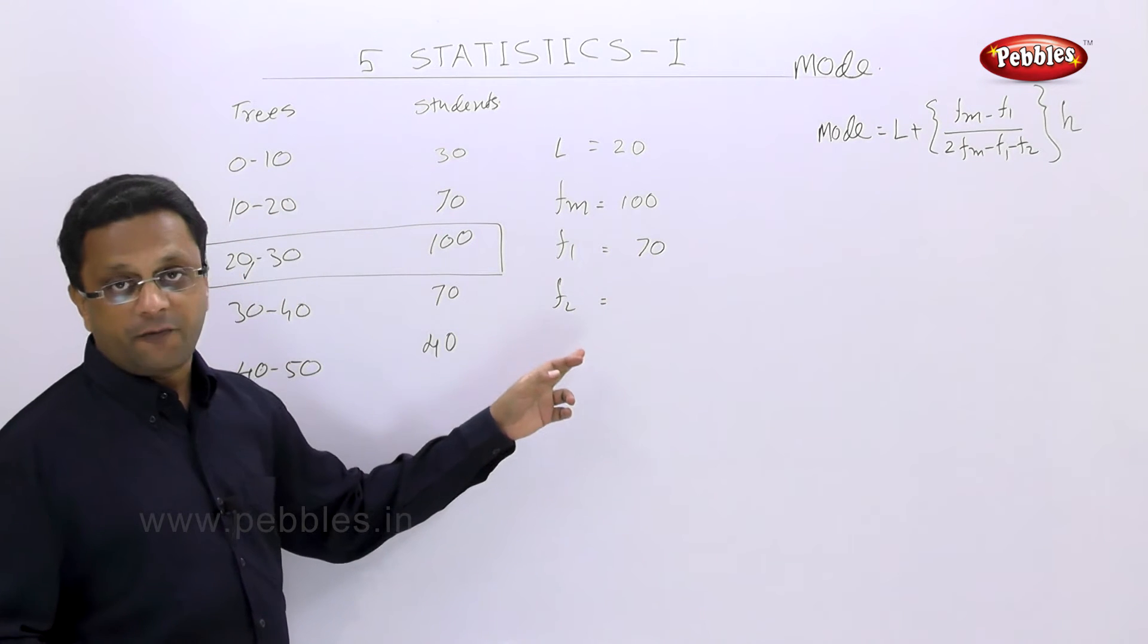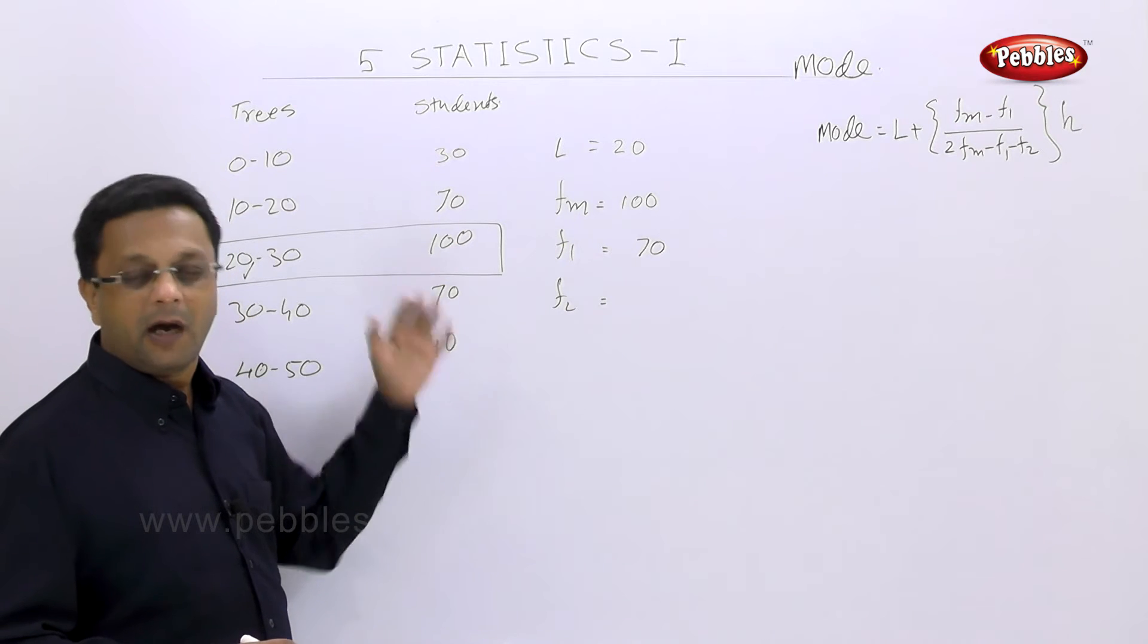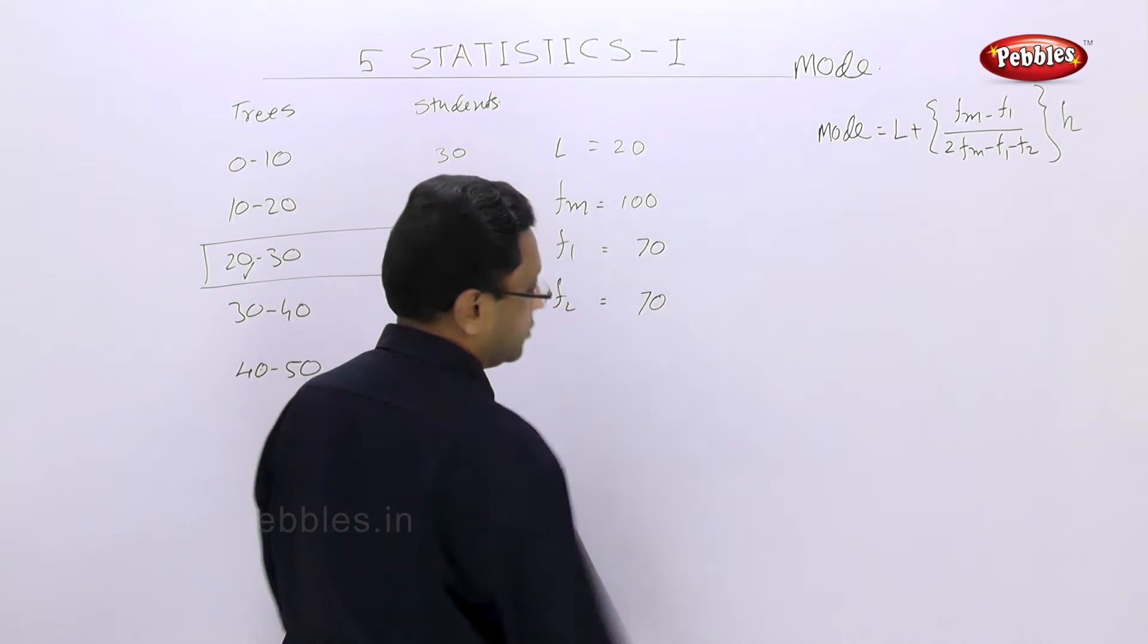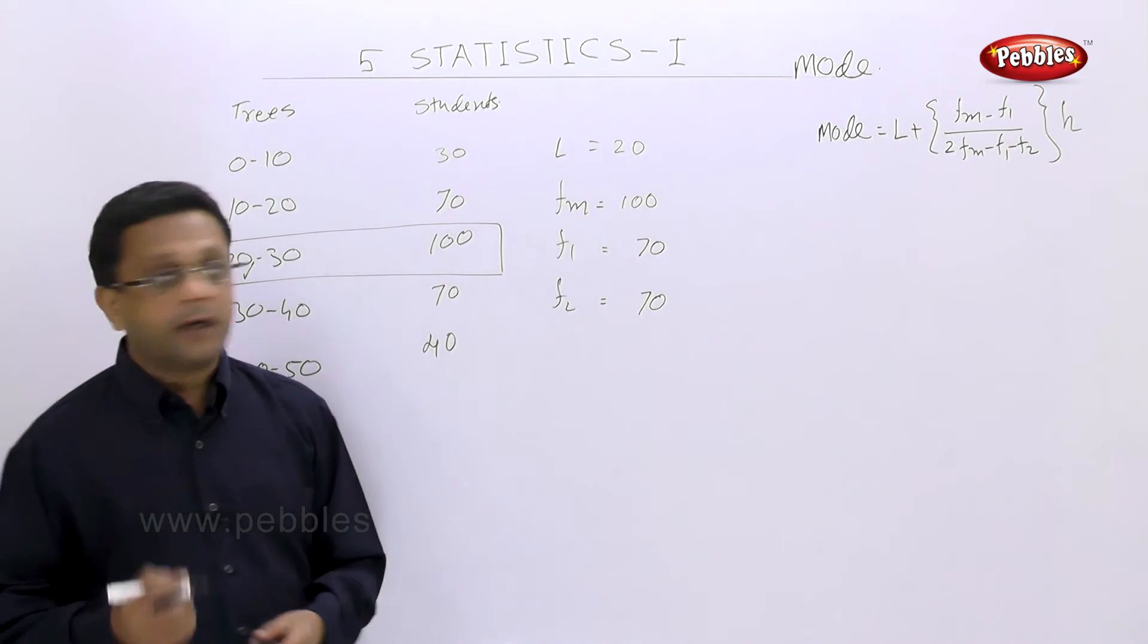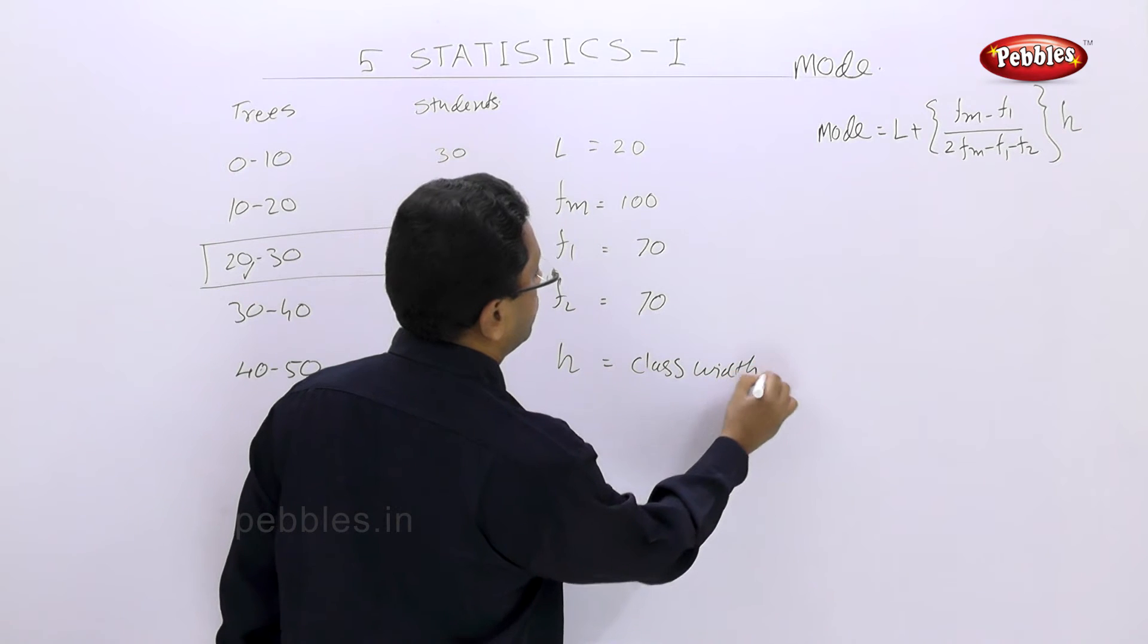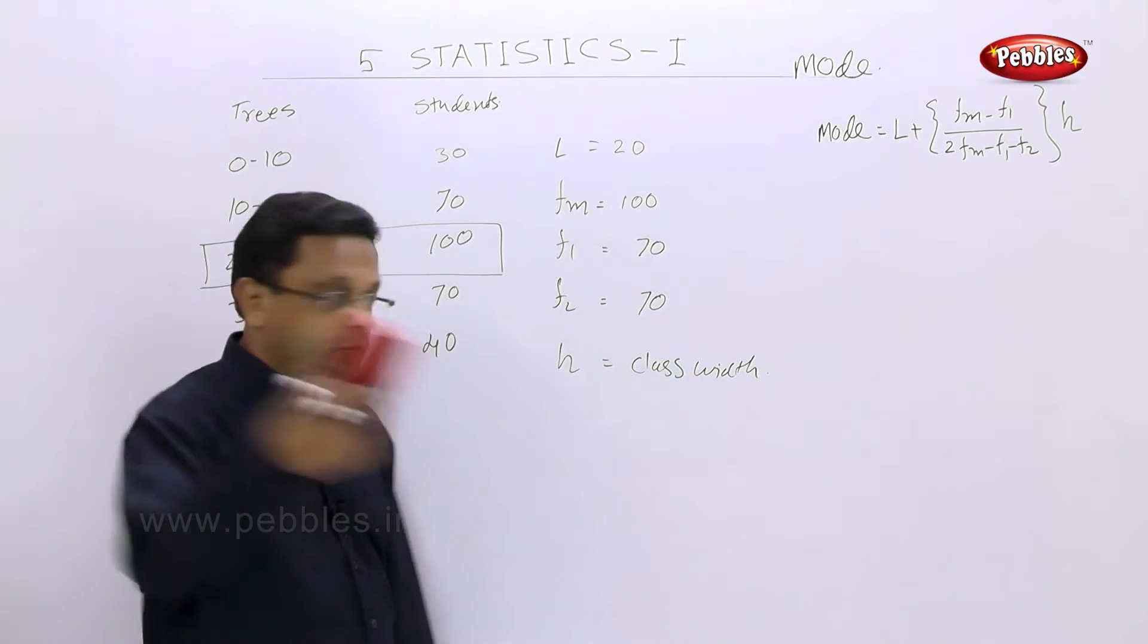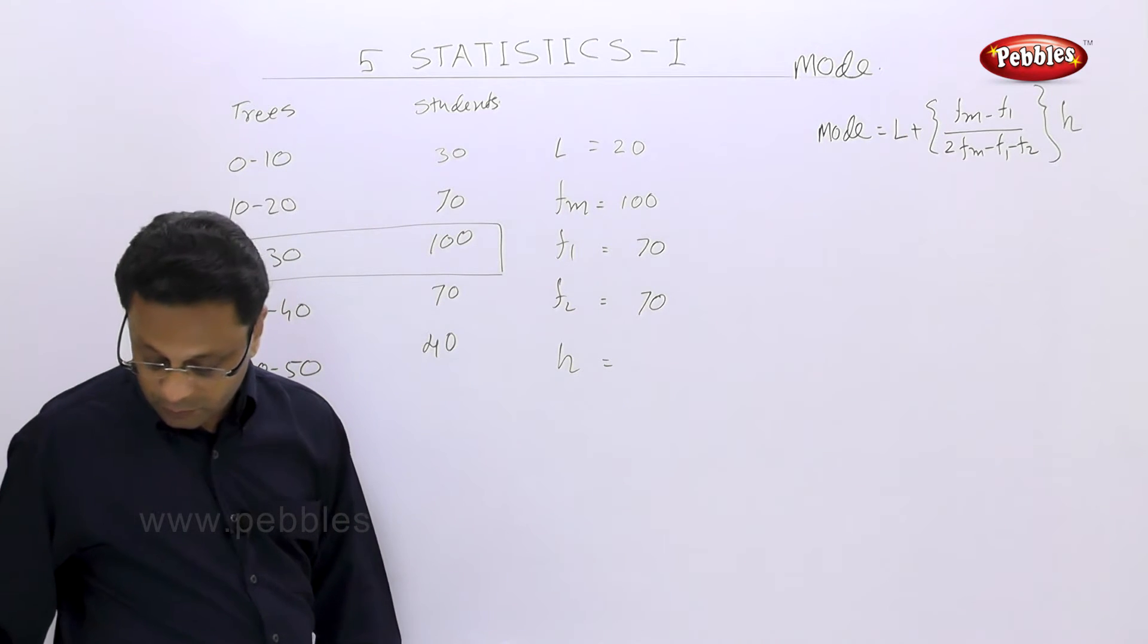And F2 is the frequency of post-modal class, that means just below. Next value of frequency. Here in this case, both are 70. And H is the same as class width. You remember this. So in this case, H is equal to 10.